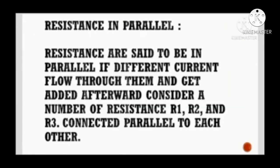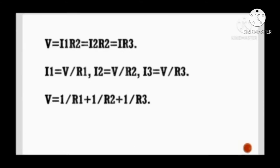Resistance in parallel: Resistances are said to be in parallel if different currents flow through them and get added afterward. Consider resistances R1, R2, and R3 connected in parallel. The currents are I1 equals V upon R1, I2 equals V upon R2, I3 equals V upon R3. Therefore, 1/R equals 1/R1 plus 1/R2 plus 1/R3.